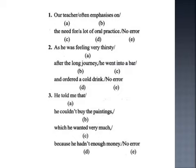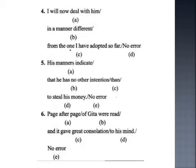Question number four: 'I will now deal with him (A) in a manner different (B) from the one I have adopted so far (C) / no error (D).' Question number five: 'His manners indicate (A) that he has no other intention (B) than (C) to steal his money (D) / no error (E).'